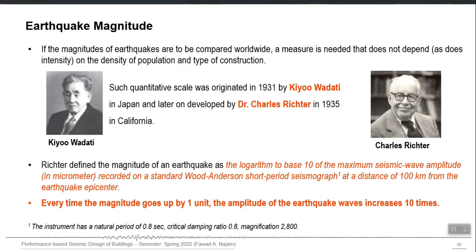Therefore the concept of magnitude came — instead of basing the earthquake size on the destruction or effect of ground shaking, why not make another parameter which is universally applicable. The very first persons who developed that definition of the size of earthquake were, almost at the same time, Kiyoo Wadati in Japan and Charles Richter. Both of these researchers almost simultaneously proposed that we should have a magnitude of an earthquake which is universal, so one earthquake should have the same number everywhere on earth.